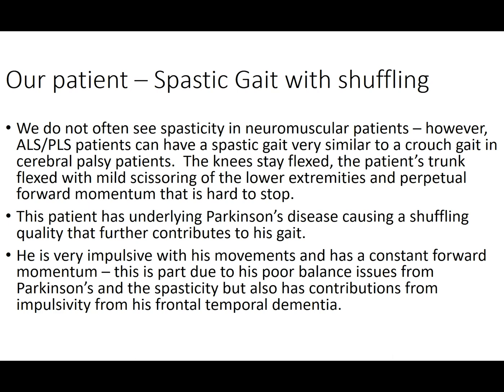But he also has spasticity — he scissors, he is up on his toes, with that forward momentum and knee flexion very classic for a crouched gait. We don't typically see a spastic gait in neuromuscular patients, especially not with a Parkinson's overlay, but he has ALS — a relatively new diagnosis. Even though he had an altered gait from Parkinson's, in the three to six months prior to this video he had a marked increase in falls. With spasticity, forward momentum, and Parkinson's affecting his ability to start and stop movement, he was a fall waiting to happen. His impulsivity — even in the exam room with manual muscle testing — was part of his Parkinson's dementia and likely some frontal release from the ALS, making this combination of gait abnormalities extremely dangerous.